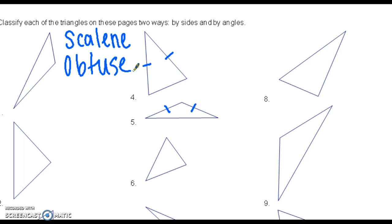When you're classifying by angles, acute means all three are less than 90, right means that one of them is 90 degrees, and obtuse means that one of them is bigger than 90 degrees. So for number two, two of the side lengths are the same, so that's isosceles, and they're all less than 90 degrees, so that is acute.